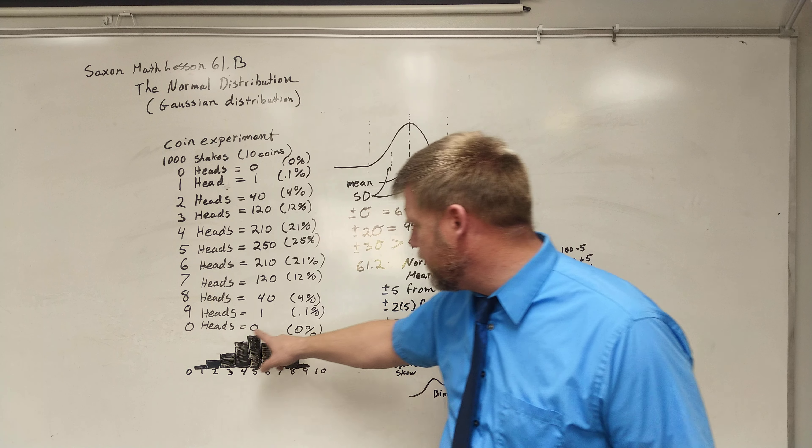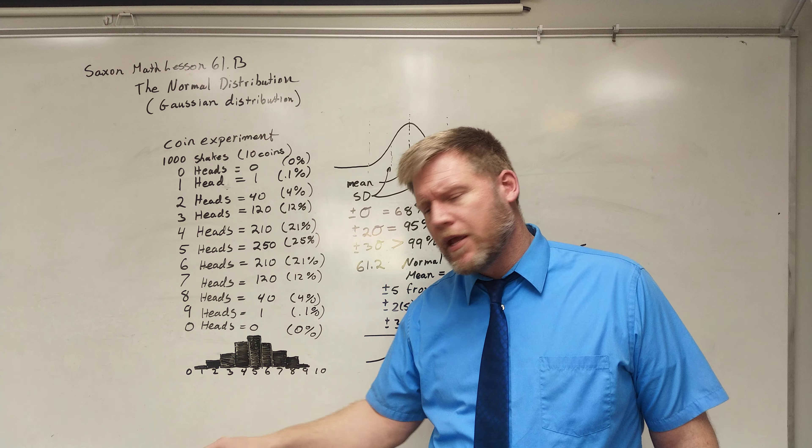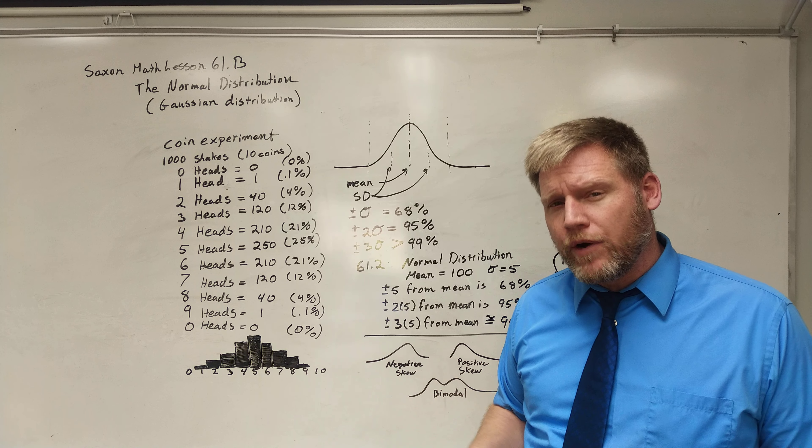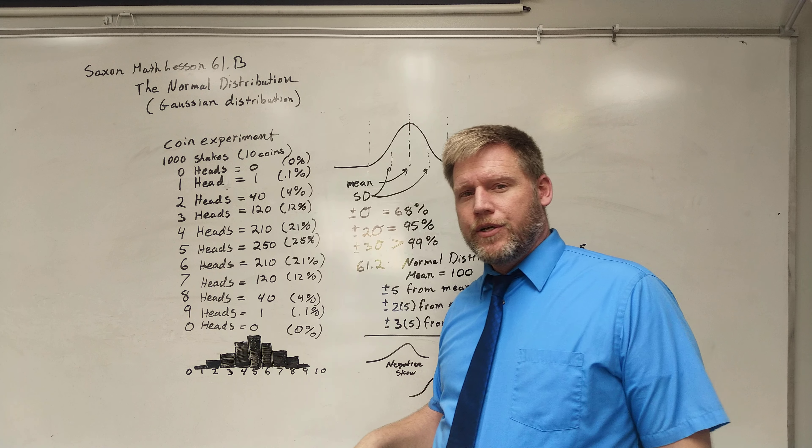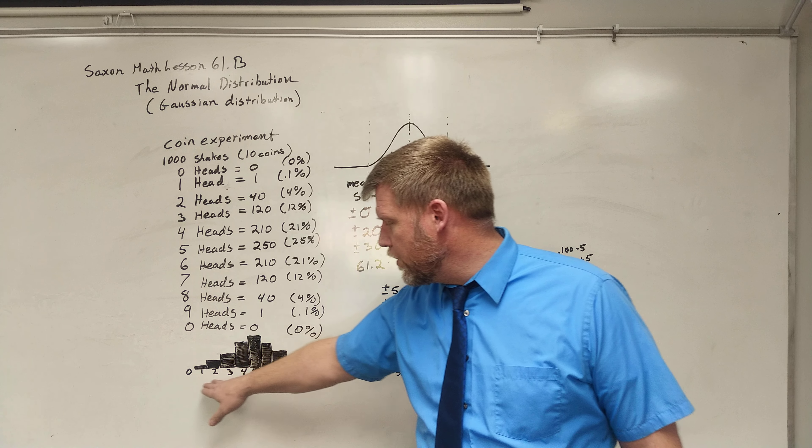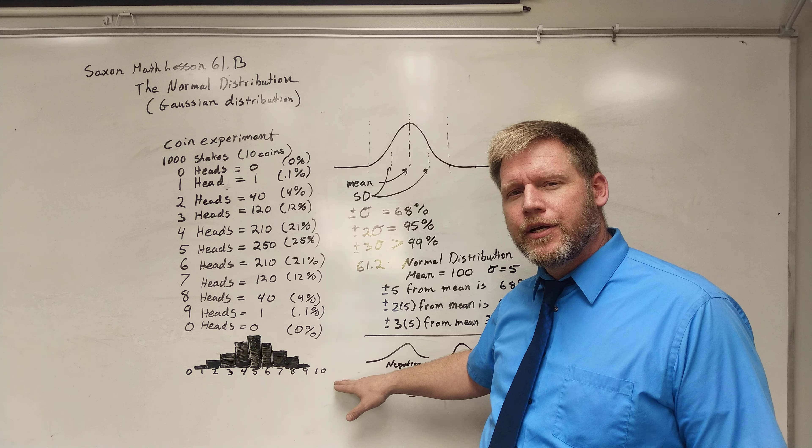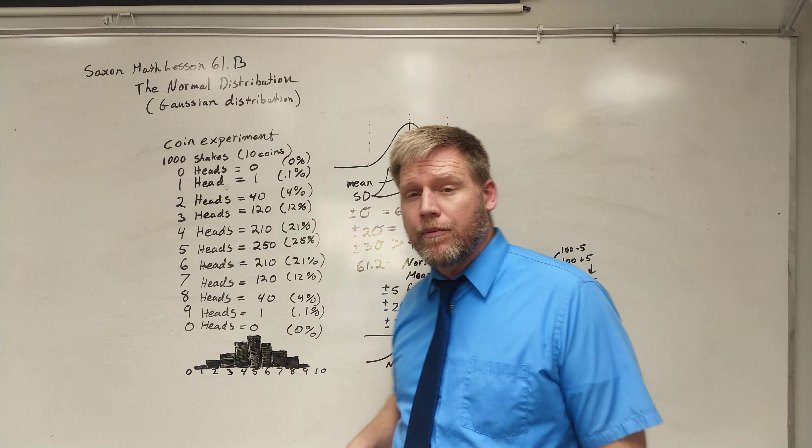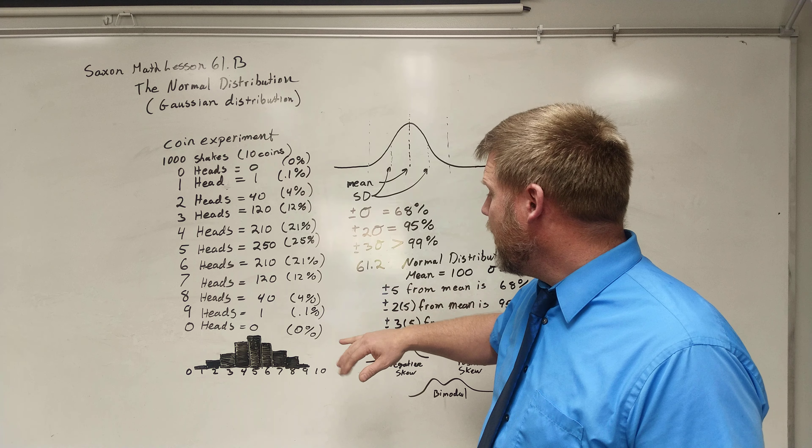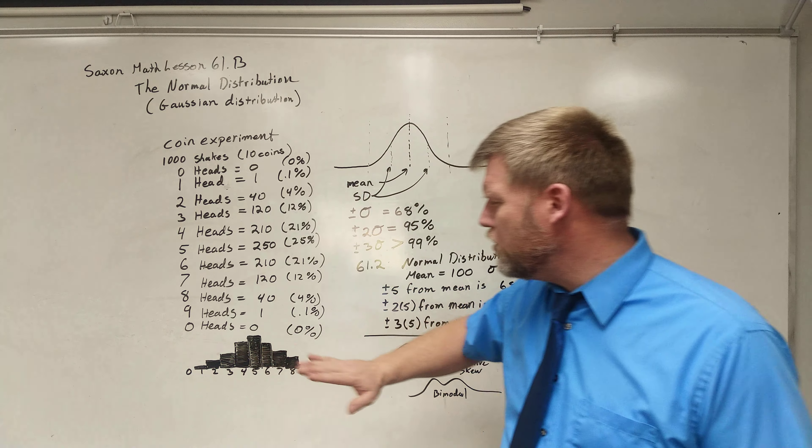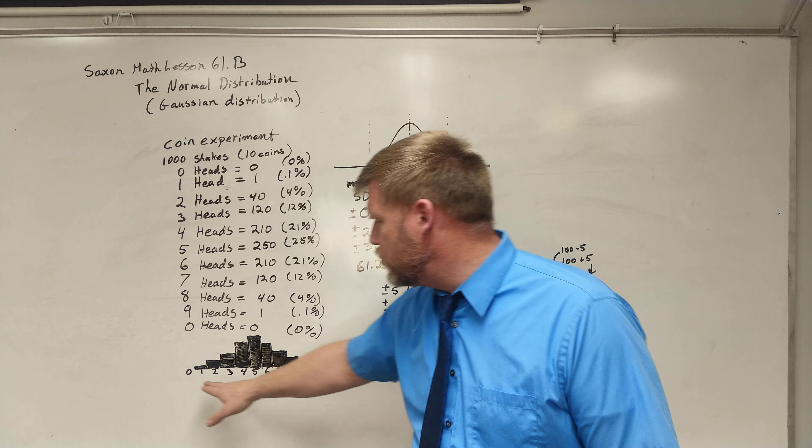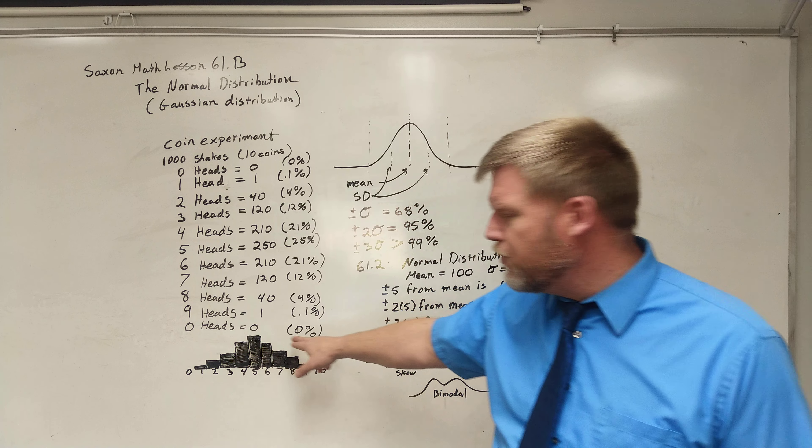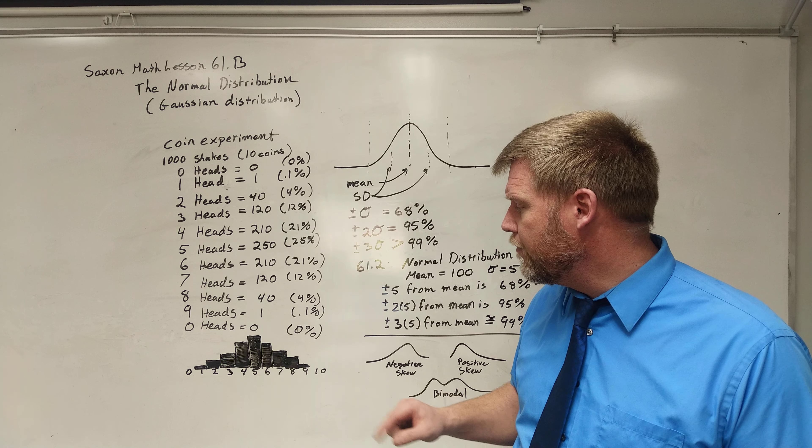And if I connected these, I would get just a little up and back down, right? Just a little hump. And that little hump there will smooth out. If I did this with 20 coins, if I did it with a hundred coins, my distribution is going to look like this. It's more often going to happen that the central number is going to happen most often.